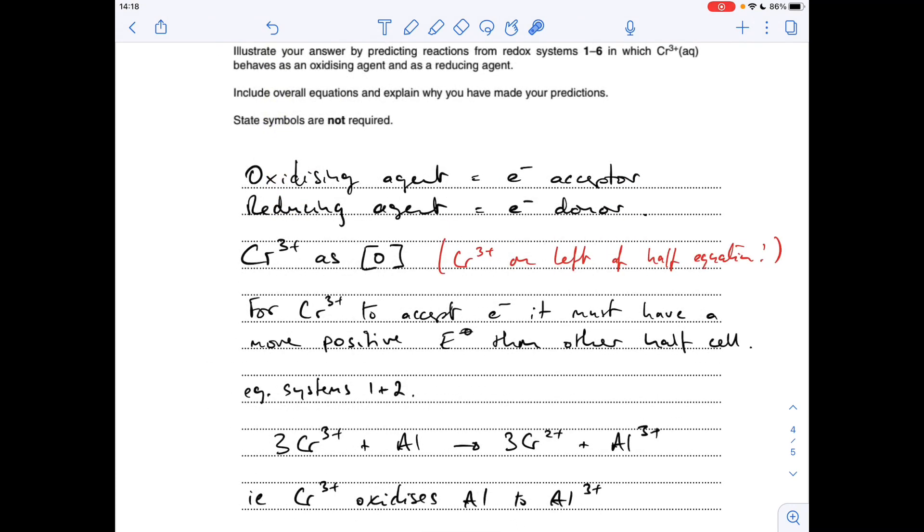For chromium 3+ to accept electrons, it must have a more positive electrode potential than the other half cell. In other words, systems one and two. There's the overall equation. Chromium 3+ oxidises aluminium up to aluminium 3+.